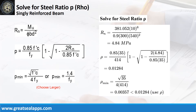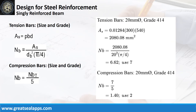For singly reinforced beam design: given maximum moment equals 381.052 kN·m, resistance factor equals 0.9, b equals 300 mm, and d equals 540 mm. The beam design ratio RN equals 4.84 MPa. Given ρ equals 0.01284, b equals 300 mm, and d equals 540 mm, the area of steel for tension bars is 2,080.08 square millimeters. The number of bars for 20 mm bar is 7.084, rounded up to 8 bars.